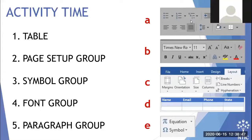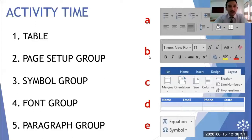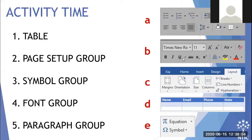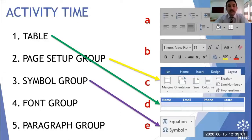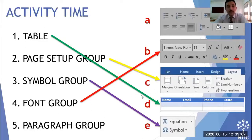The final question was about the Paragraph group — answered correctly. Now let's see all the answers: Table is D, Page Setup group is C, Symbol group is E, Font group is B, and Paragraph group is A. Thank you very much.